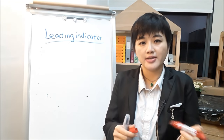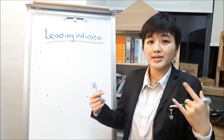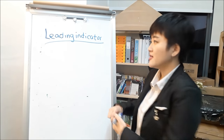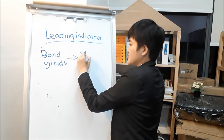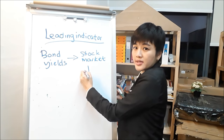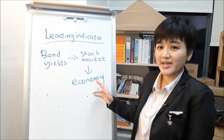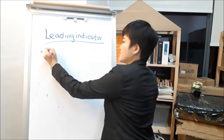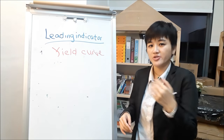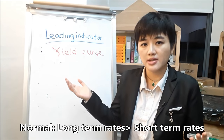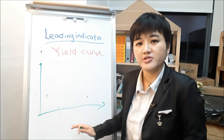The leading indicator we were talking about: you know how the stock market is a leading indicator of the economy because it moves before the economy recovers? There is actually a leading indicator for the stock market, and that is bond yields. Bond yields lead the stock market, and the stock market leads the economy. What you look at specifically is the yield curve. The yield curve plots the difference in rates between short-term and long-term bonds.